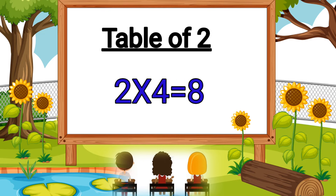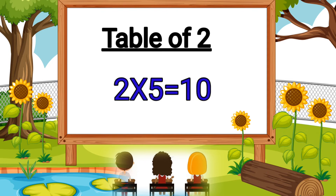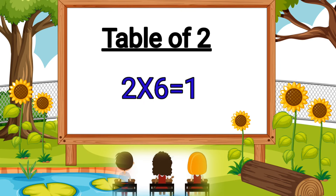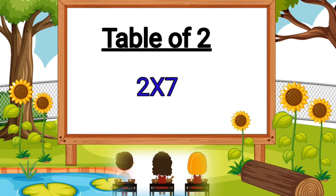Two fours are eight. Two fives are ten. Two sixes are twelve. Two sevens are fourteen.